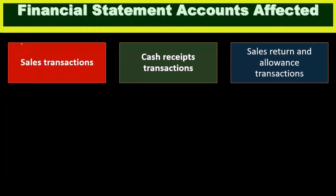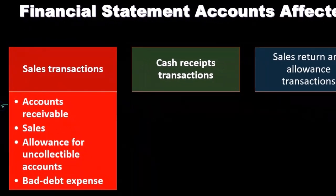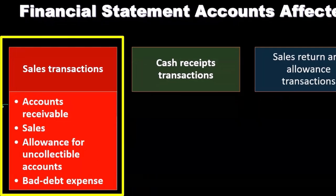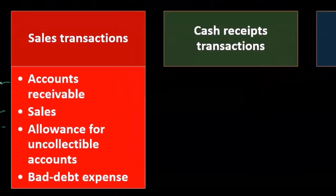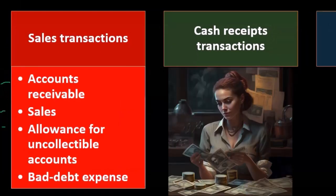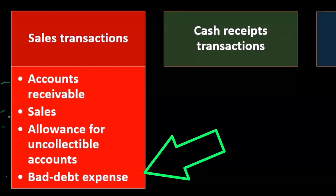These are the financial statement accounts affected as we consider revenue. The sales transaction will involve accounts receivable if we make sales on account, so as we test the revenue process we'll also be testing accounts receivable. We'll have sales or revenue involved in the sales transactions. The allowance for uncollectible accounts relates to the net value of accounts receivable, and bad debt expense represents receivables that won't be collected — it's really like a negative sale.